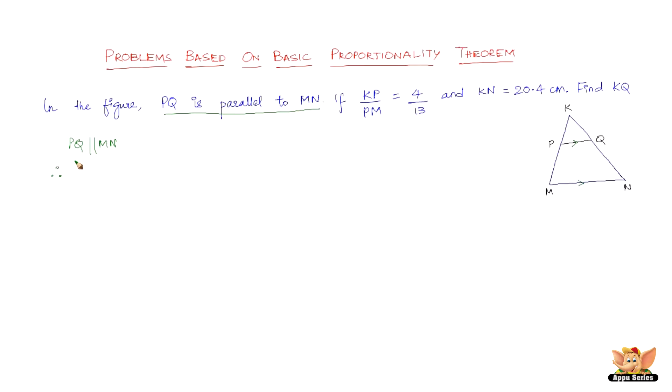So therefore, what happens? If a side is parallel to one side of a triangle, then that side divides the other two sides in the same ratio. That's what we've learned from basic proportionality theorem. So therefore, we've got KP/PM = KQ/QN. This follows from basic proportionality theorem. BPT is the abbreviated form of basic proportionality theorem.